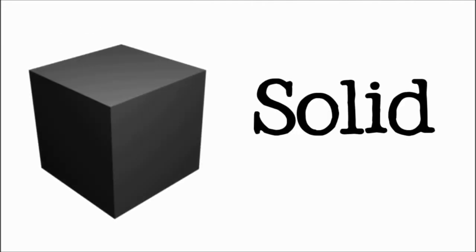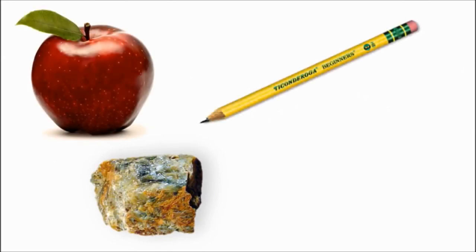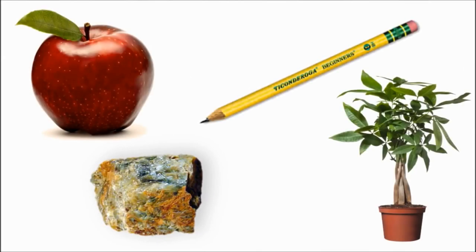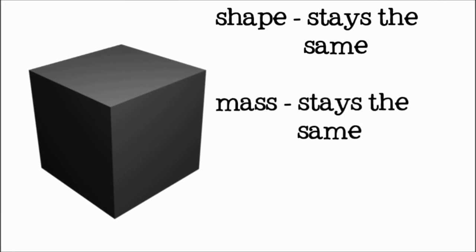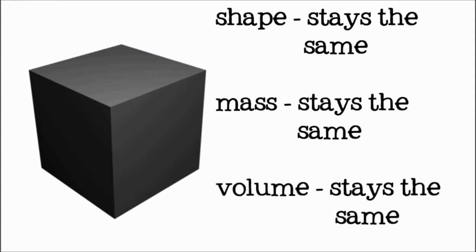Solids are easy to recognize. Rocks, apples, pencils, and plants are all examples of solid objects. A solid object has a definite shape that doesn't change when you move it or put it in a container. They also have a consistent mass and volume.